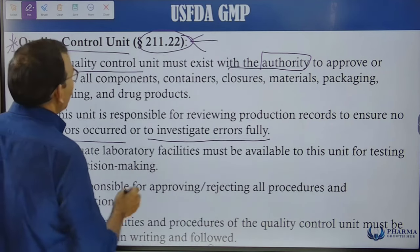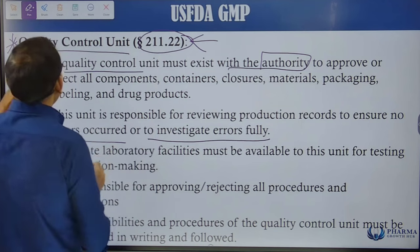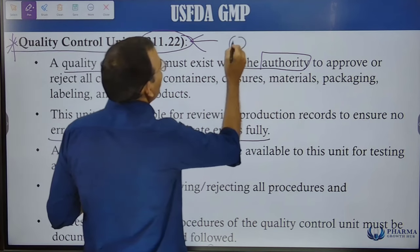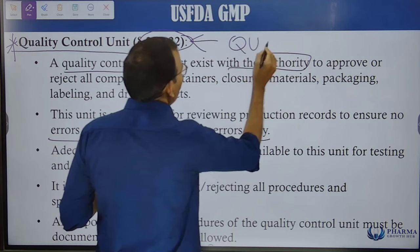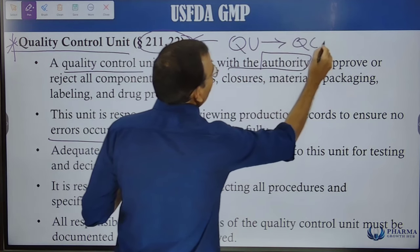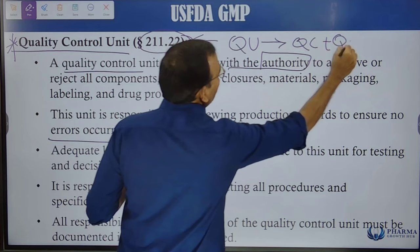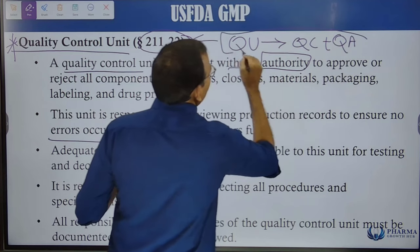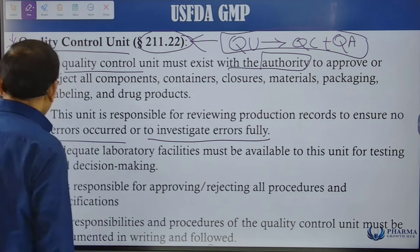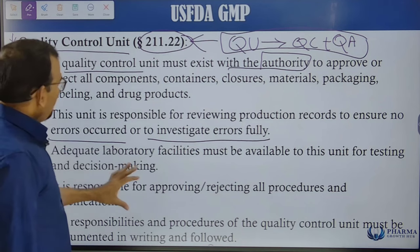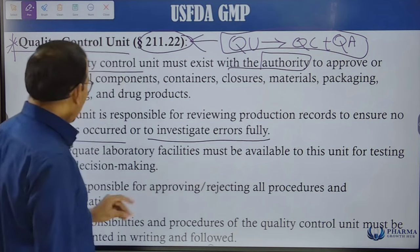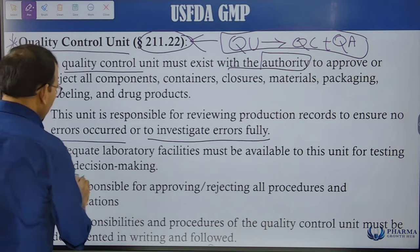The Quality Control Unit is one component of your Quality Unit. The Quality Unit comprises Quality Control plus Quality Assurance. Adequate laboratory facilities must be available to this unit for testing and decision making.